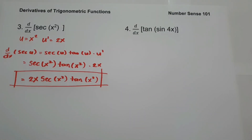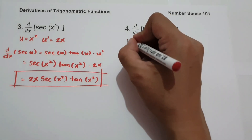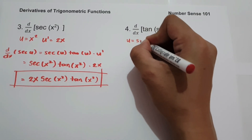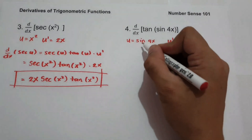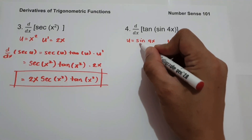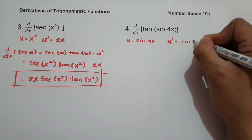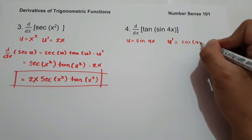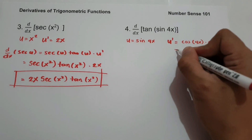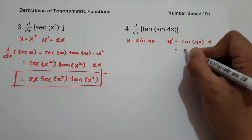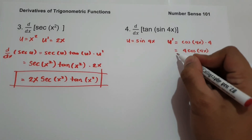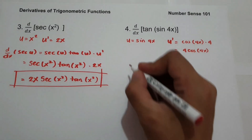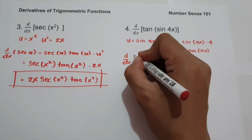On number 4, what is the derivative of tan(sin(4x))? As you can see, the value of u is sin(4x). And u' is the derivative of sin(4x). The derivative of sine is cosine, so we have cos(4x) multiplied by 4 — using the chain rule — giving us u' equal to 4cos(4x).